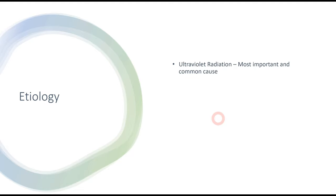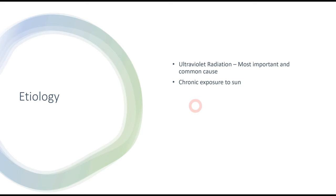Talking about the etiology of basal cell carcinoma, the most common cause — responsible for most cases — is ultraviolet radiation from the sun. When there is chronic exposure to the sun, the skin exposed to it, for example the face, is the most vulnerable to developing basal cell carcinoma.